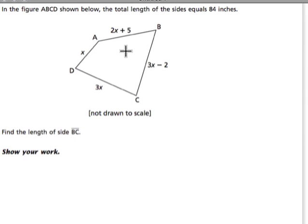In this problem, we have the total length of the sides equals 84 inches, which means that the perimeter of whatever shape we're given. Here we have a four-sided shape, looks like a polygon, and it's closed.